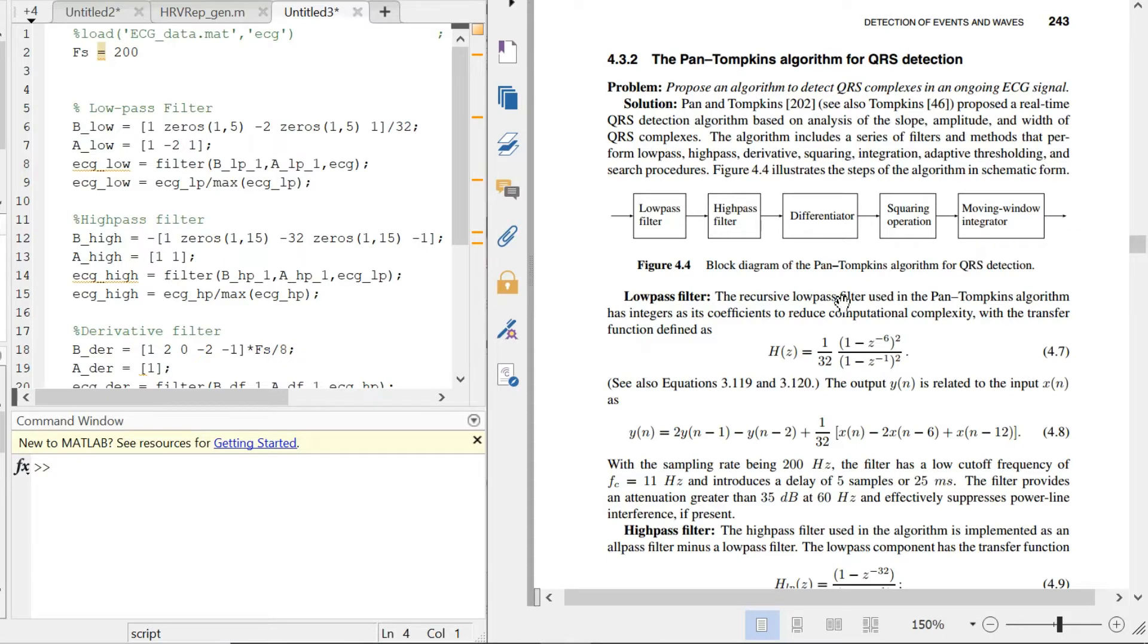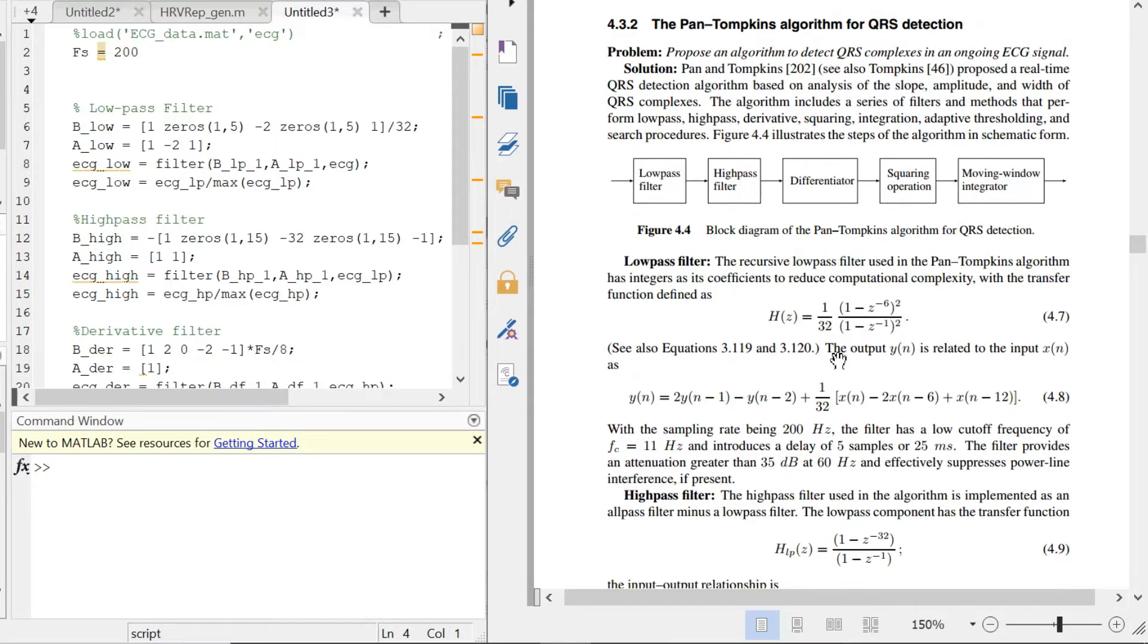For this current case, I want you to focus on the equations that Pan-Tompkins takes for the low pass, high pass, the differential function, the squaring, and the integrator function. This information you can find anywhere online publicly. I am referring to the book Biomedical Signal Analysis by Rangayan.